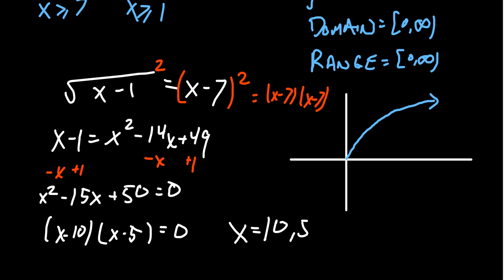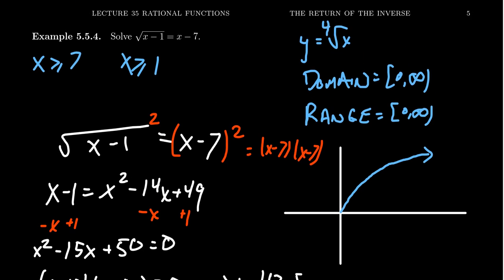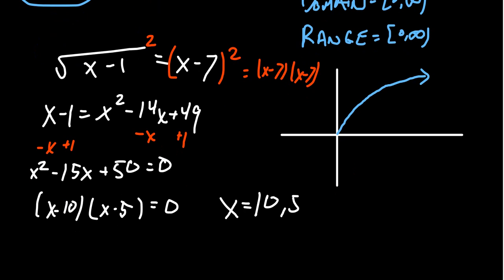We end up with two solutions, but one has to be very cautious. The square root of x minus one is only valid if the right-hand side is positive or zero — and the right-hand side x minus seven is only positive when x is greater than seven. So x equals 5 is not invited — it's not greater than seven. Therefore, x equals 10 is the solution to this radical equation. x equals 5 is what's called an extraneous solution — it looked like a solution, but it really isn't.